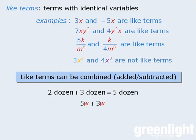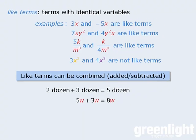Similarly, since the w in the term 5w has the same value as the w in 3w, we can combine these two terms to get 8w. This process of combining terms is called simplifying.